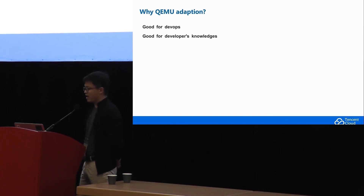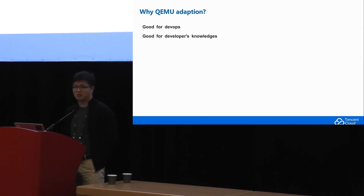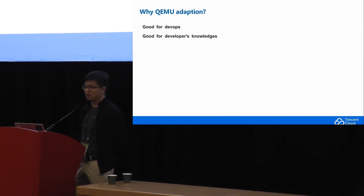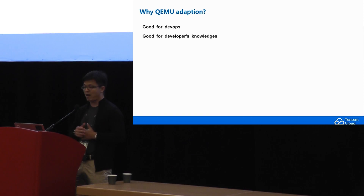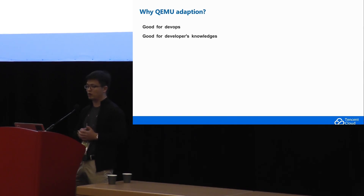Why? Because our infrastructure is based on QEMU and we have been using QEMU for so many years. QEMU is excellent and very stable in our production. If we switch to another project, that means we need to maintain two different projects — a huge burden for us. Another reason is that our people have a strong background in QEMU and can detect and fix any issues very quickly. So based on that, we prefer to adopt QEMU to meet our requirements.